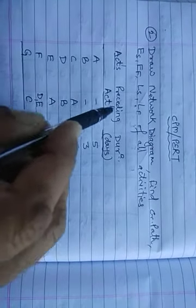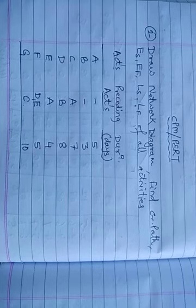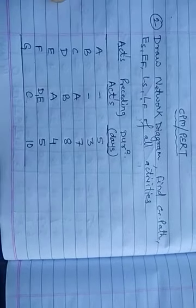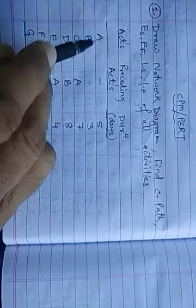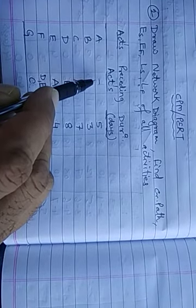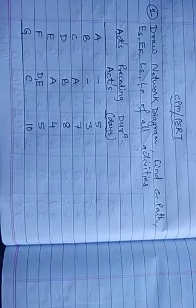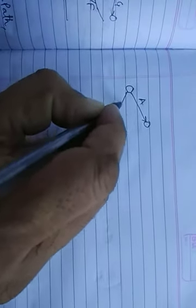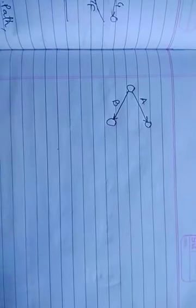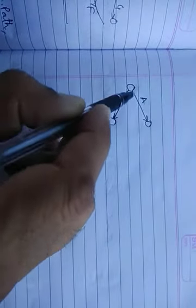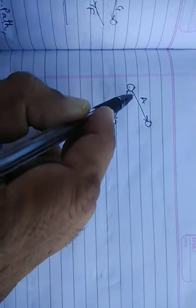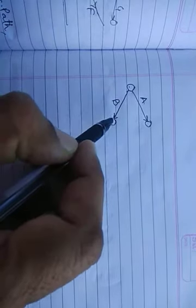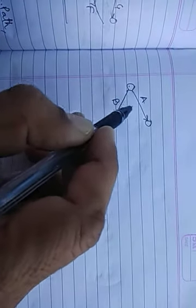They have given the duration. If the numerical is in such form, the first step is to draw the network diagram. Since activities are given, we write them directly on the lines, not as events. Activity A has no preceding activity, and B also has no preceding activity, so both A and B are starting activities. For C, preceding is A, meaning A should come before C.